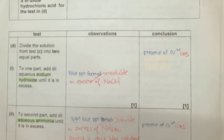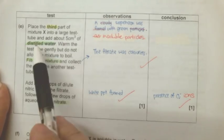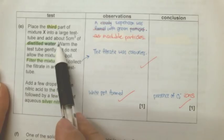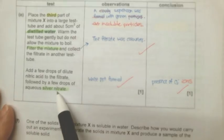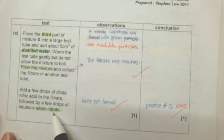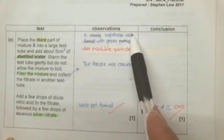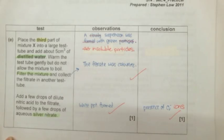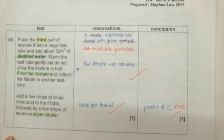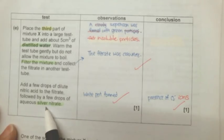Let's look at the third part of the experiment. In the third part of the experiment, you are supposed to add DI water or distilled water and filter the mixture, followed by adding silver nitrate. You could write something like that. The first part of the experiment formed green insoluble particles. The filtrate was colorless. After you've added in silver nitrate, the white PPT will form.